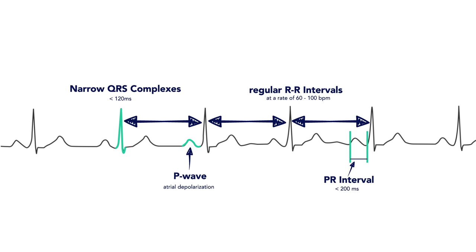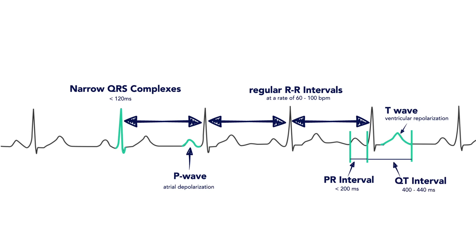Finally, the ventricles repolarize, which is represented on your rhythm strip as a T-wave. This interval to repolarization should fall between 400 to 440 milliseconds after the initiation of the QRS complex. This is called the QT interval.